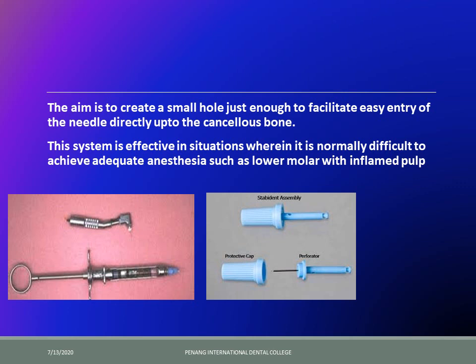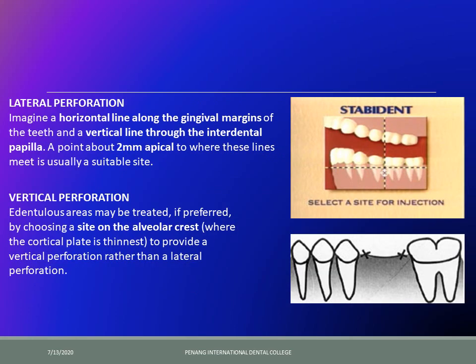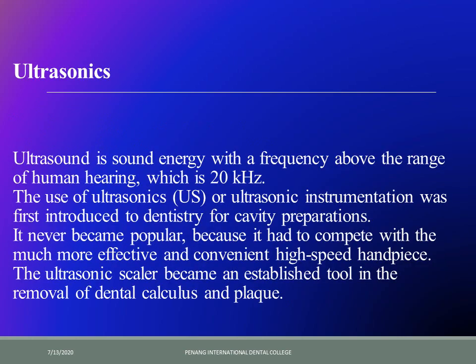To select the injection site, imagine a horizontal line along the gingival margins of the teeth and a vertical line through the interdental papilla. A point about 2 mm apical to where these lines meet is the suitable site. As seen in the figure, the horizontal line is along the gingival margins, the vertical line is through the interdental papilla between the second premolar and first molar, and 2 mm apical to that point — marked with an X — is where you drill the bone and inject directly into cancellous bone for more favorable results.